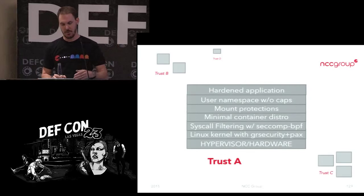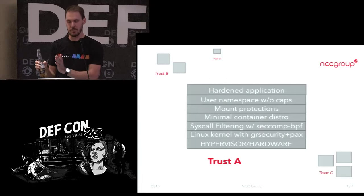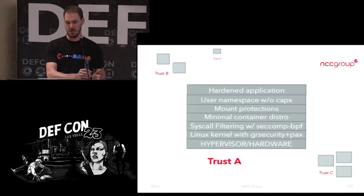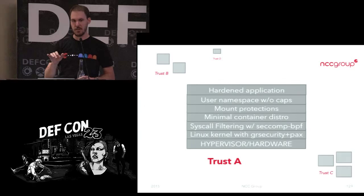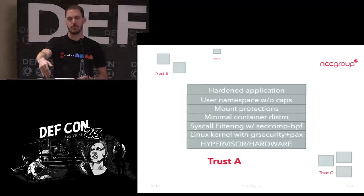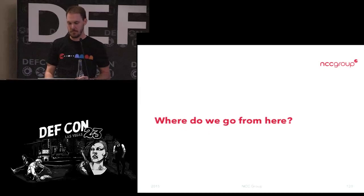The core picture is: you've got your hardened application, under that you've got your user namespace, you've dropped capabilities, then you have mount protections — the container is read-only except maybe for log files. Then you've got a minimal container distro, then seccomp filtering, then a MAC system, and you can even do a hypervisor or some other kind of virtual machine to gain actual hardware separation. Isolate the whole thing by some trust level, and do that differently for different things — your front-end API containers should be treated with different trust than a back-end container with your database.